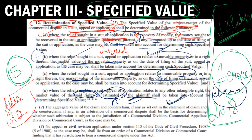Fifth determinant: for a counter claim, the total aggregate value of all claims or counter claims — after setting off any set-off amounts — will determine the value. Also, if there has been an arbitration of a commercial dispute, it will be examined whether that arbitration falls within the jurisdiction of the commercial division, commercial appellate division, or commercial court. So these factors decide jurisdiction in the case of a counter claim.